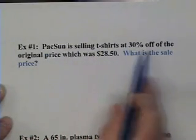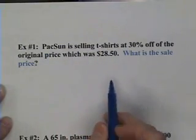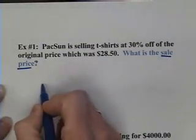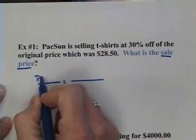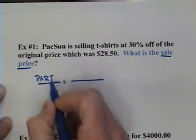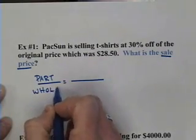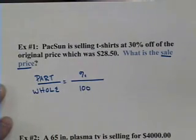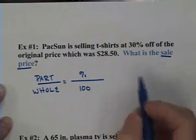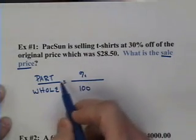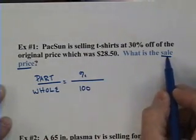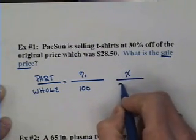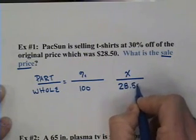PacSun is selling t-shirts at 30% off of the original price, which was $28.50. Since we're looking for sale price, I'm going to use a proportion like we've been using in class. Instead of using 'is over of,' I'm going to substitute the words 'part over whole.' I'll still have my percentage on the top right, and I'll still have my constant value of 100, because it's a percent. The part of the amount I'm looking for is my sale price — I don't know that yet — so I'm going to use X for my variable. The whole value is the original cost of the t-shirt, $28.50.